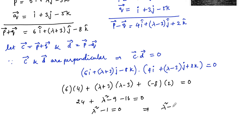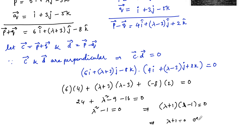So λ² = 1, or (λ+1)(λ-1) = 0. Therefore λ + 1 = 0 or λ - 1 = 0, so the value of λ can be plus or minus 1.